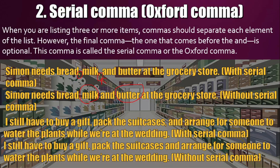Another example: 'I still have to buy a gift, pack the suitcases, and arrange for someone to water the plants while we are at the wedding.' The serial comma appears before 'and arrange.' Without the serial comma: 'I still have to buy a gift, pack the suitcases and arrange for someone to water the plants while we are at the wedding.' Both ways are correct. If you like, you can use the serial comma; if not, you can just remove it.